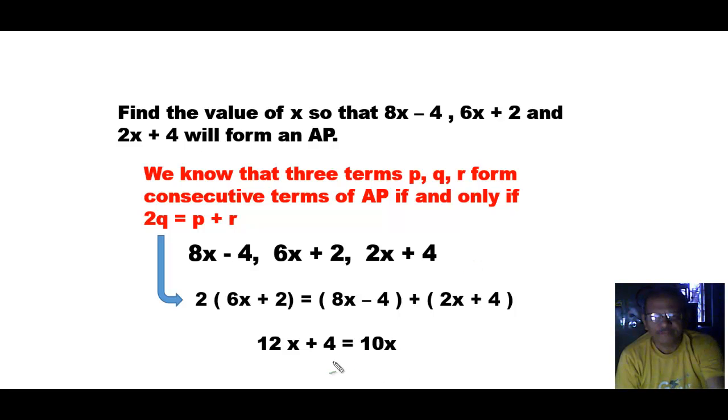Now here, take 10x to this side and you will get 12x minus 10x, that is 2x. Shift 4 to the other side and you will get equals minus 4. Therefore, you will get the value of x as minus 2. So the required value of x is minus 2.